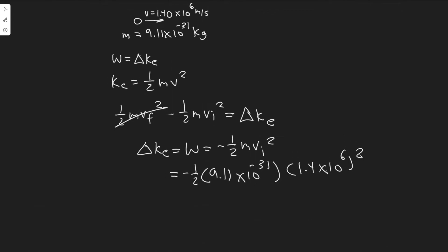So let's go ahead and plug this in. Minus 0.5 times 9.11 times 10 to the minus 31, multiplied by 1.4 times 10 to the 6, then we will square that value, is going to be equal to minus 8.93 times 10 to the minus 19.